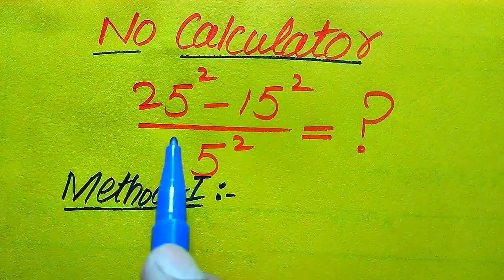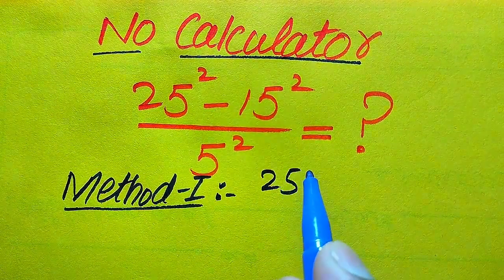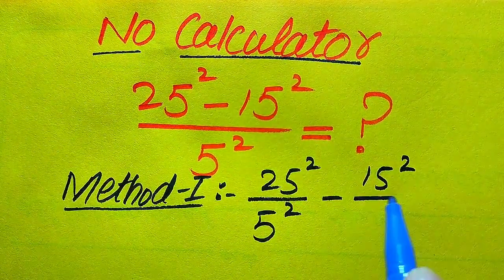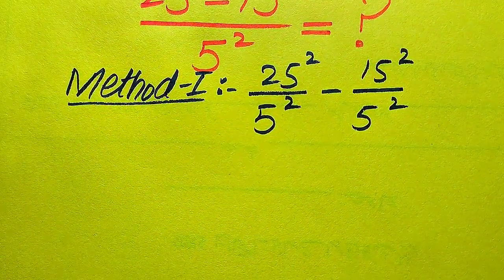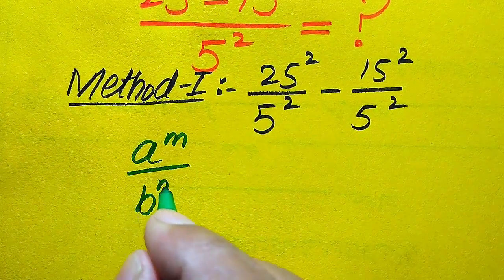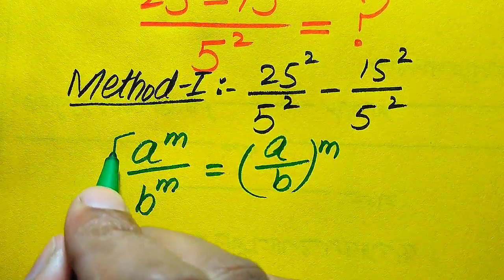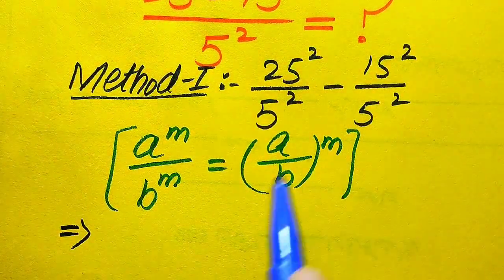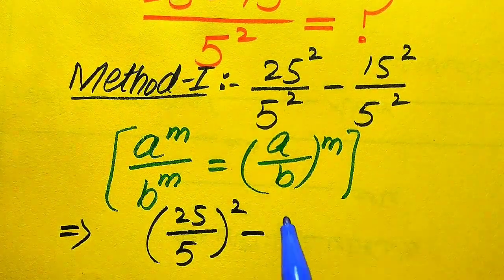In the first method, we break this fraction and write the 5 squared separately on both terms. It becomes 25 squared divided by 5 squared, minus 15 squared divided by 5 squared. Here we use the exponential law: if we have a^m divided by b^m, we write it as (a/b)^m. According to this rule of exponents, we combine the bases of both terms.